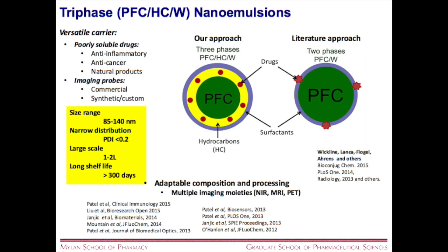Our approach in the lab since 2010 was to introduce a third phase — a hydrocarbon phase — creating what we define as a three-phase or triphasic system with perfluorocarbon, hydrocarbon, and water. That expanded hydrocarbon phase, which we have evidence surrounds the fluorocarbon as a corona, can be used to deliver anti-inflammatory agents, anti-cancer agents, poorly soluble drugs, natural products, and different imaging probes whether commercial or synthetic. We can very nicely stabilize the system — typical shelf life is over 300 days. We can control size in the range of 85 to about 140 nanometers, maintain narrow distribution, and these nanoemulsions are scalable. We can also adapt the composition to include multiple imaging moieties: NIR, MRI, PET, and so on.